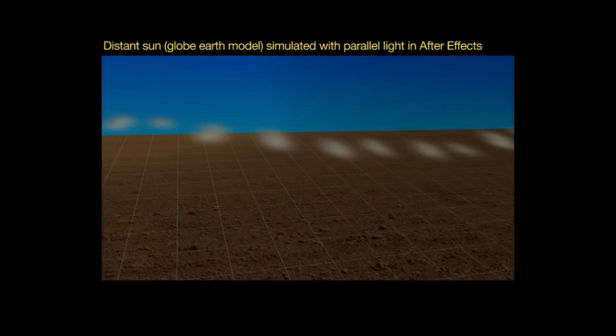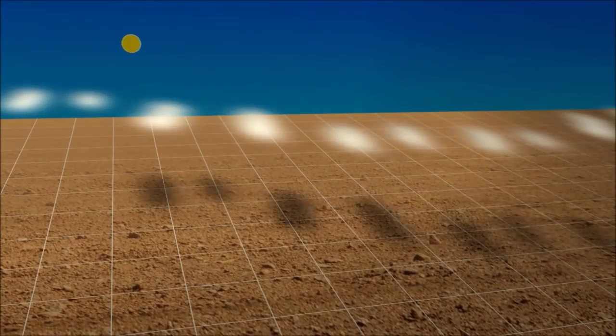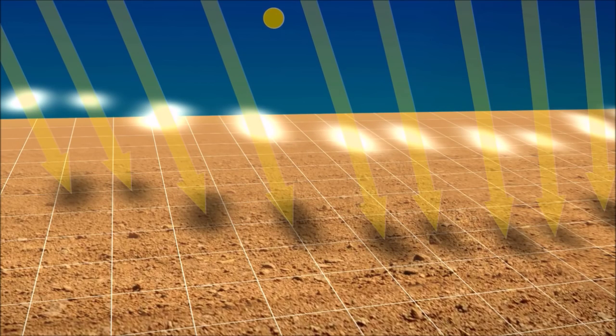After Effects has the option to make a parallel light source. So, you know, as the Sun is supposedly 96 million miles away, 155 million kilometers, it's pretty much parallel. As you can see, when I draw lines from the shadows on the ground through to the clouds, they kind of diverge or converge at the bottom.